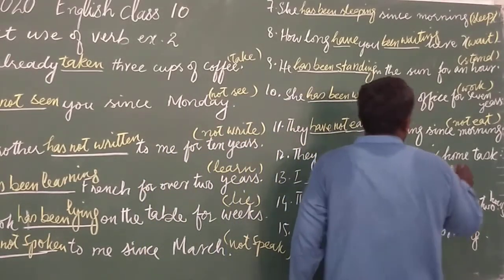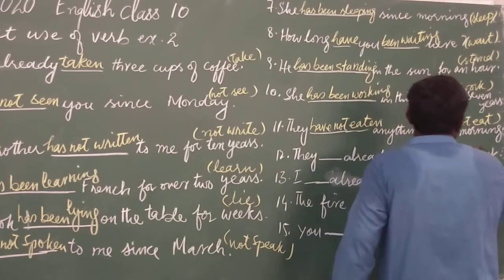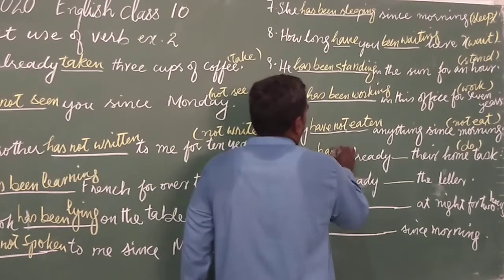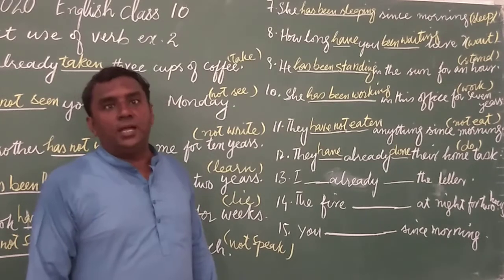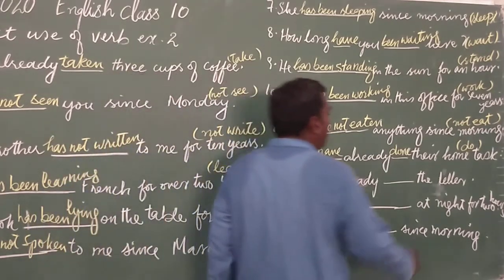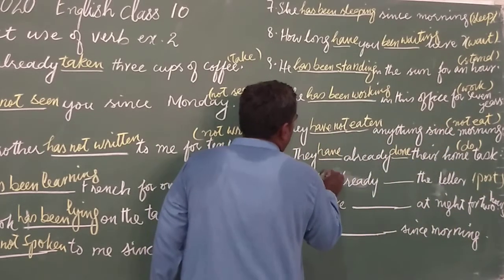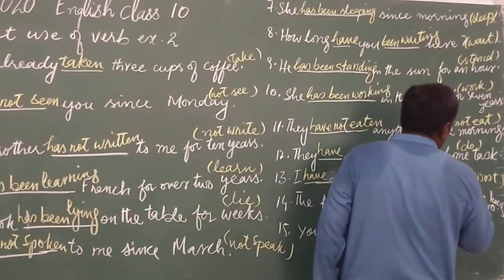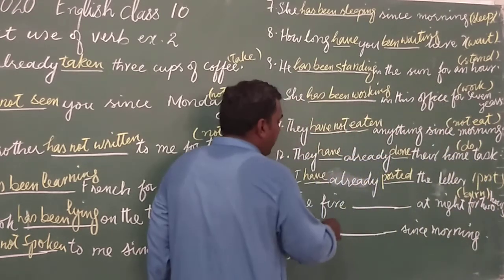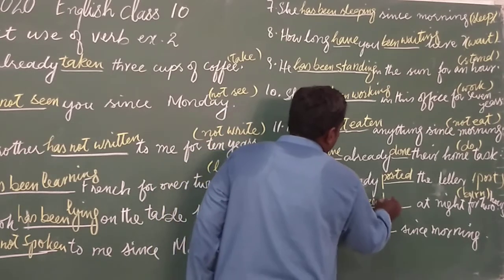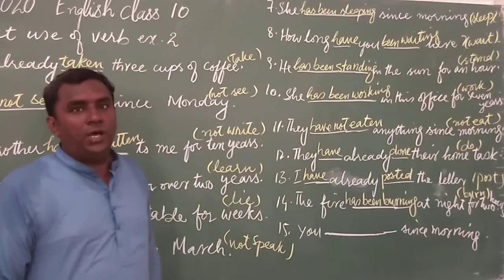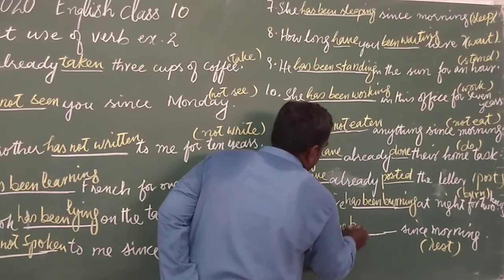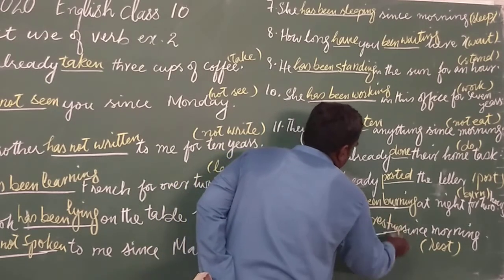Sentence twelve: 'They dash already dash their own task' — with 'do': They have already done their own task. Sentence thirteen: 'I dash already dash the letter' — with 'post': I have already posted the letter. Sentence fourteen: 'The fire dash at night for two hours' — with 'burn': The fire has been burning at night for two hours. Sentence fifteen: 'You dash since morning' — with 'rest': You have been resting since morning.